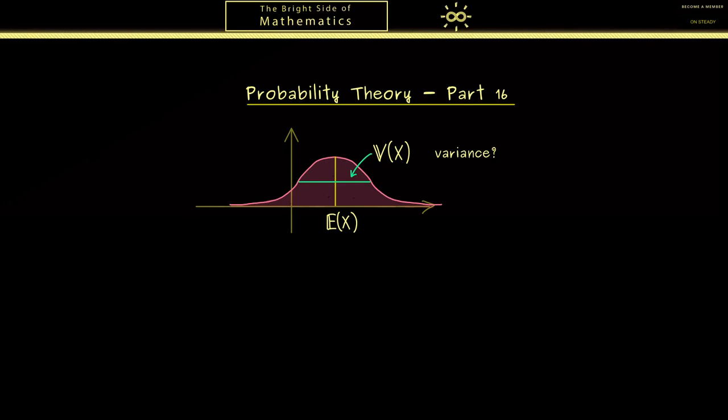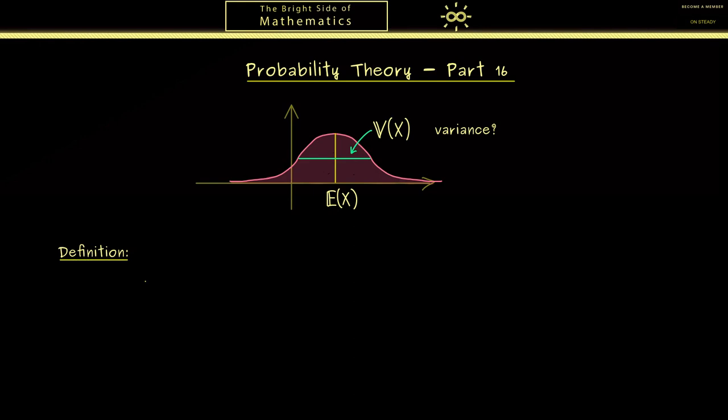The assumptions you already know: we need a probability space and a random variable X. Because the random variable X maps into the real numbers, the expectation E is by definition also a real number. The same holds for the variance because it's also an expectation. There are a lot of different notations for the variance, but most of the time you see V or Var.